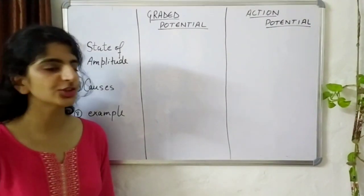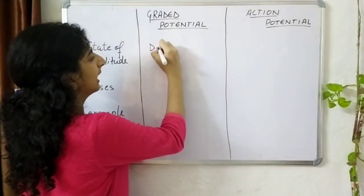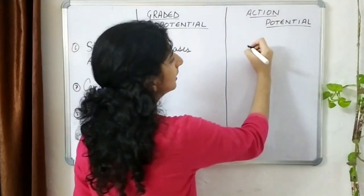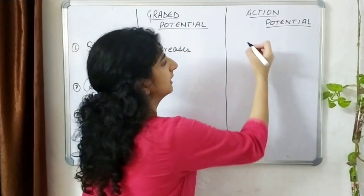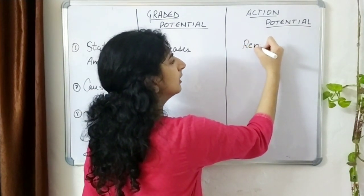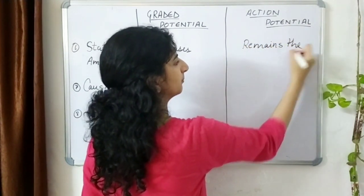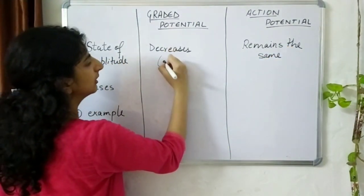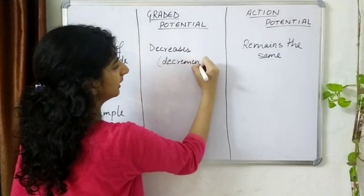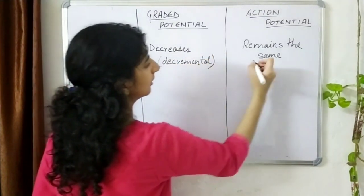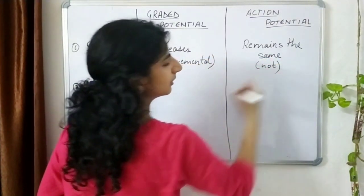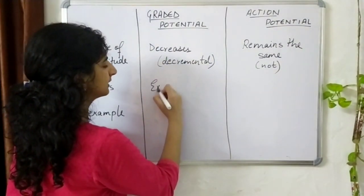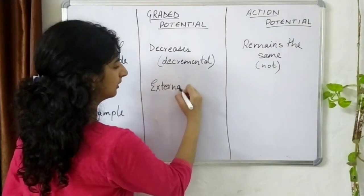The amplitude of a graded potential decreases as it moves forward — it is decremental — while in an action potential the amplitude remains the same.